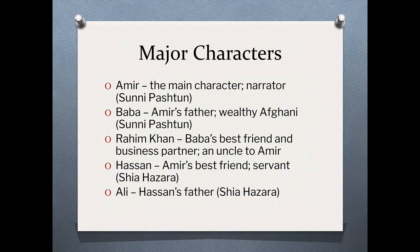Here are our major characters. Amir is our protagonist and narrator — he is a Sunni Pashtun. Baba is his father, a very wealthy Afghan and also a Sunni Pashtun. Rahim Khan is Baba's best friend and business partner, and he serves as a kind of uncle to Amir, although they are not blood-related. Hassan is Amir's best friend — he is a servant and a Shia Hazara. His father is Ali, who is Baba's actual servant and also a Shia Hazara.